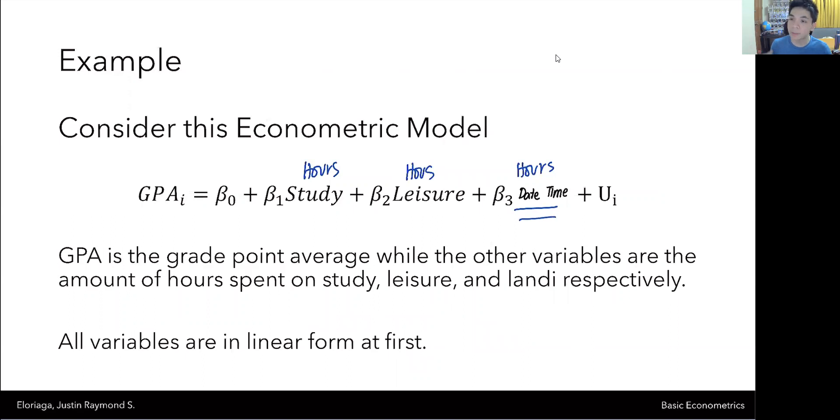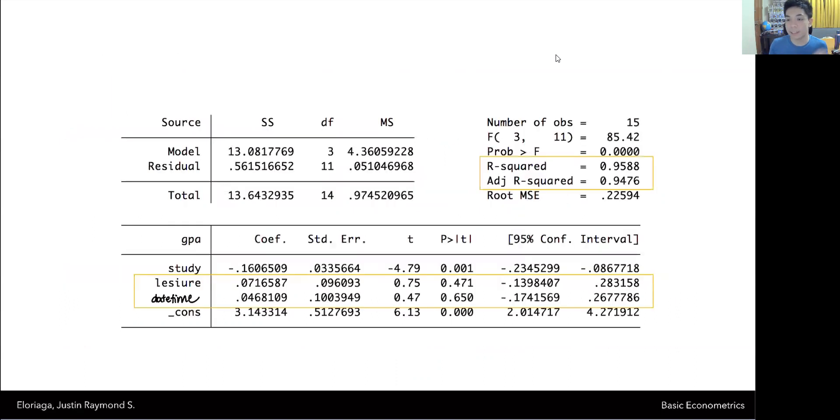If you were to think about it clearly, the hours that you spend on a date, there's a sort of overlap with the leisure hours in general because oftentimes you consider them almost one and the same. So I would think that there would be multicollinearity between leisure and daytime. And indeed, when you notice the coefficients of leisure and daytime are as follows.